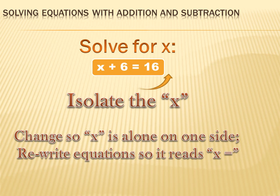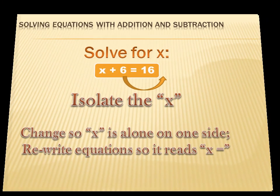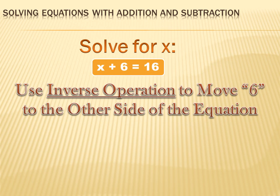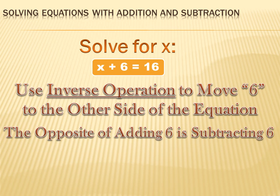So what you want to do is move that 6 from the left side of the equation over to the right side, so the only thing left on the left side is x and it reads x equals something. We want to get rid of that 6. Here's the trick: you use the inverse operation. You do the opposite of adding 6 to get rid of the 6. What's the opposite of adding 6? Subtracting 6.